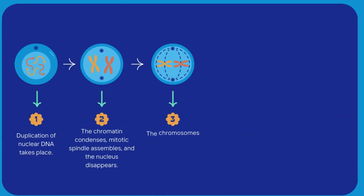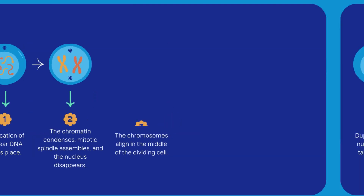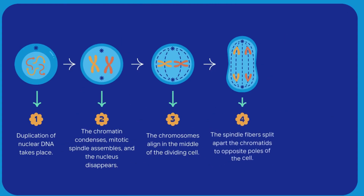Then the two chromosomes which are formed during the process are aligned in the middle of the cell on the spindle fibers, which are produced by centrioles. In the fourth step, the spindle fibers split apart the chromosome material, the two chromatids are produced, and they move to the opposite poles of the cell.